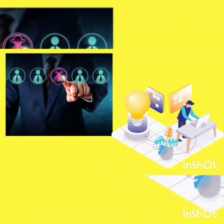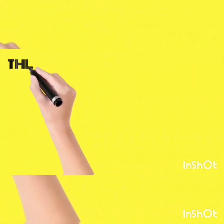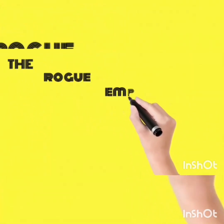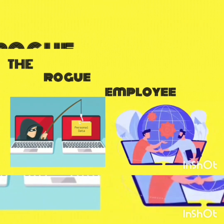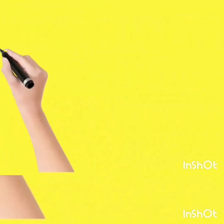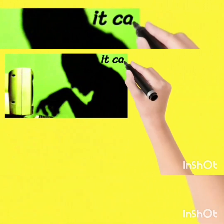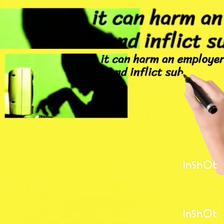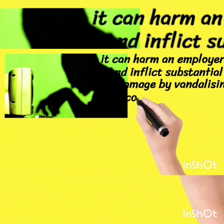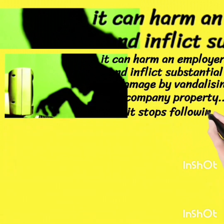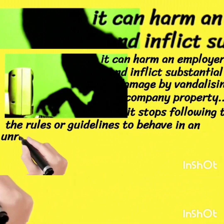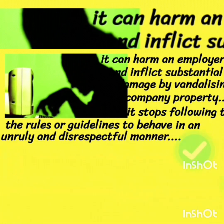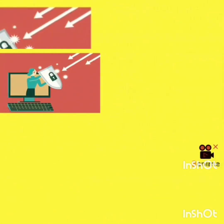The next one is the rogue employee. A rogue employee steals personal data, and can harm an employer by inflicting substantial damage — vandalizing company property, stopping following rules or guidelines, and behaving in an unruly and disrespectful manner. That is why this type is called the rogue employee.